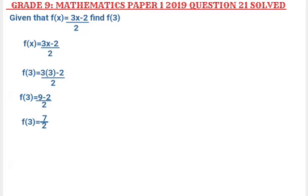Before we divide, f of 3 is equal to 2 into 7: 7 will go 3 times with remainder 1. Can 2 go into 1? No, it can't. So we are going to put 1 together with 0 so that it becomes 10, and we put a decimal point, so it becomes 3 point something. Then 10 divided by 2 gives us 5. So f of 3 is equal to 3.5.